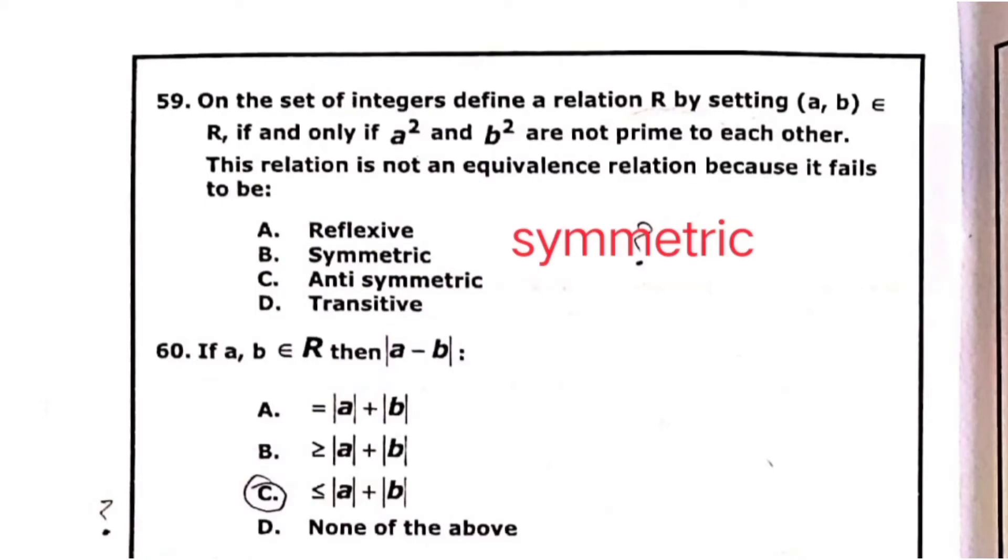Question 59: in the set of integers define a relation R by setting A, B that belongs to real numbers R, if and only if square of A and square of B are not prime to each other. This relation is not an equivalence relation because it fails to be symmetric.